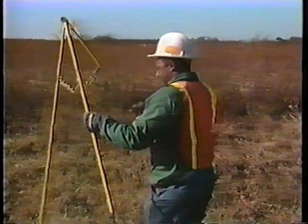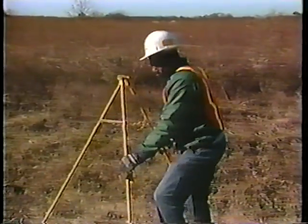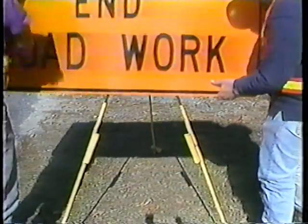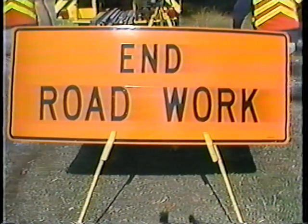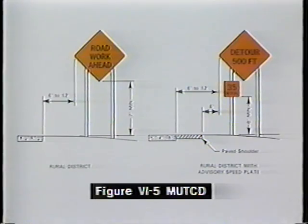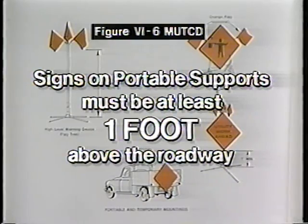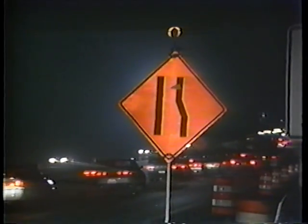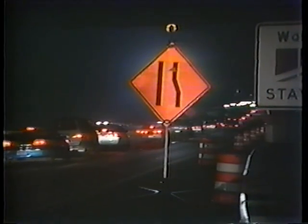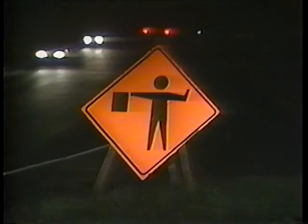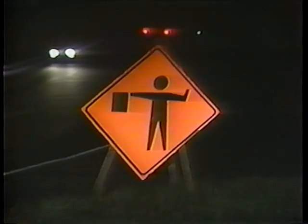Lightweight, yielding, or breakaway supports should be used for all sign installations. Sign installations should be reviewed to avoid any possible glare from vehicle headlights. Signs on portable supports are required to be at least one foot above the roadway. All signs used at night are required by the Manual on Uniform Traffic Control Devices to be retro-reflective or externally illuminated — lighting from existing street lights does not meet this requirement.